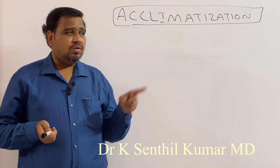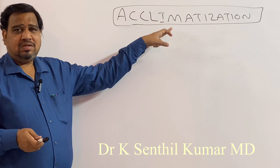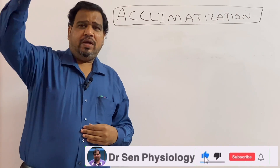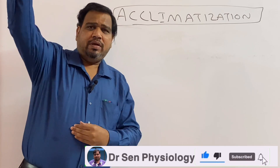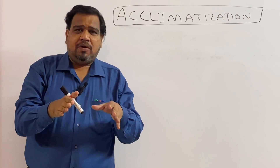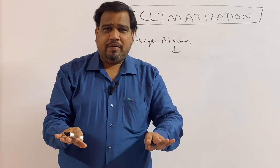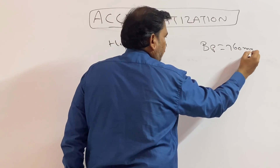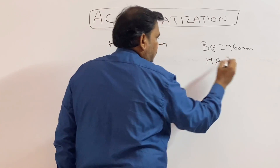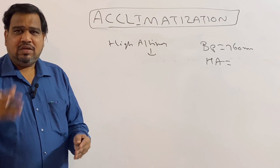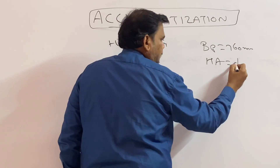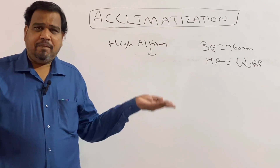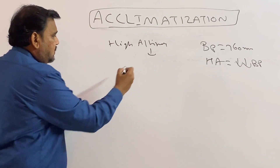Good morning students. Today I am going to discuss the topic of acclimatization. What do you mean by acclimatization? Acclimatization means whenever you are climbing to high altitude or going to a mountain, how your body responds to that. At sea level, the barometric pressure is 760 millimeter mercury. At high altitude, the barometric pressure is decreased.